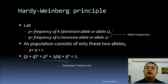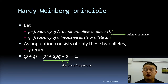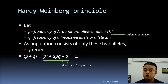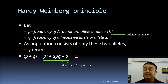The genotype frequencies come from expanding (p + q)², because it's a diploid organism. The formula is like (a + b)² = a² + 2ab + b², which we learned in basic algebra. So (p + q)² = p² + 2pq + q² = 1. That is the Hardy-Weinberg principle: combined genotype frequencies equal one.